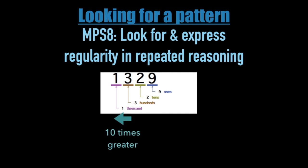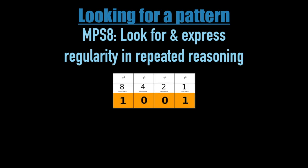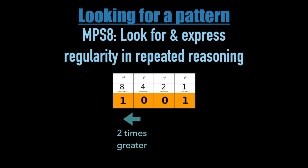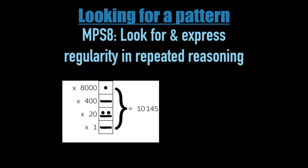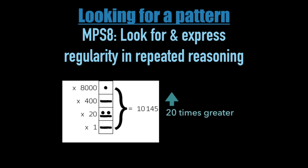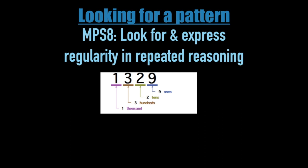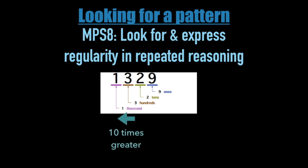Similarly, other number systems, like the computer-based binary system, use a different pattern — in that case twice as big each time. Or looking back historically, the Mayans had a base 20 system, dating back roughly to the 1st century BC. Each place value was 20 times greater than the one below it. This concept of a predictable place value increase is familiar and useful to us in our standard number system, where each place value is 10 times that of the place to its right.